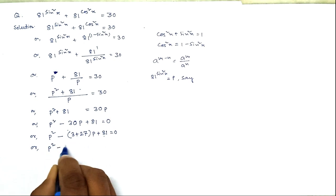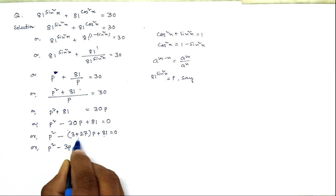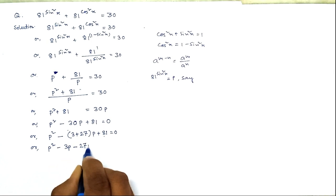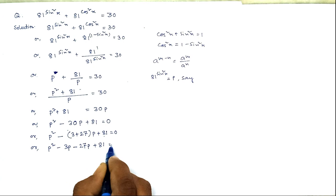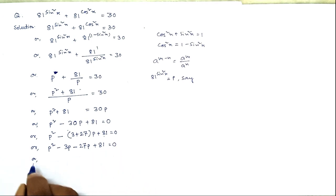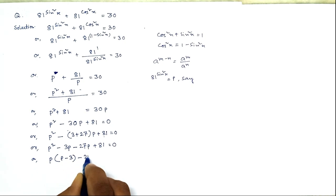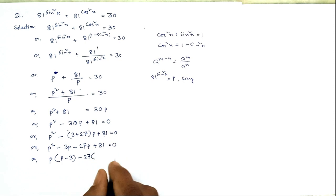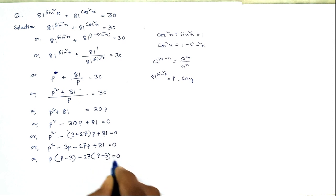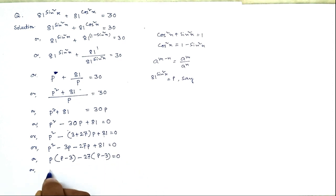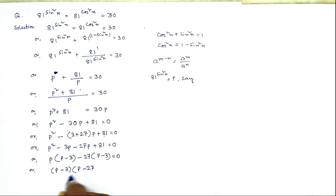So it becomes p squared minus 3p minus 27p plus 81 equals 0. Taking p common from the first two terms gives p(p minus 3), and taking 27 common from the last two terms gives 27(p minus 3). Taking (p minus 3) common, we get (p minus 3)(p minus 27) equals 0.